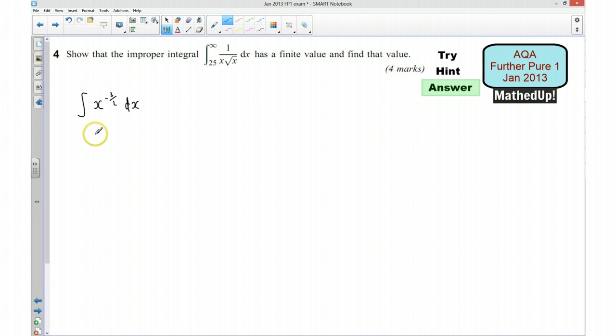Now if I integrate that, I add 1 to the power, it becomes negative 1 half. So we've got x to the power of negative 1 half, and I divide by the new power, which means I'm multiplying by negative 2. This integral equals this.